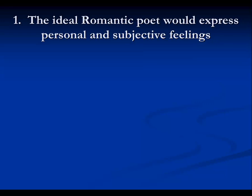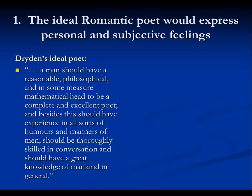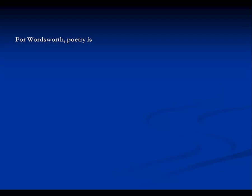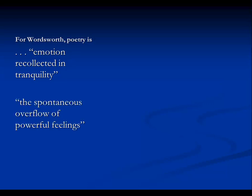The ideal Romantic poet would express personal and subjective feelings, not objective truths. If we remember the differences between Dryden's ideal poet and Wordsworth's ideal poet, you can clearly see what the Romantics are trying to express. For Wordsworth, poetry is emotion recollected in tranquility — his emotion coming out as he sits and recollects these feelings, and then they come onto the page.